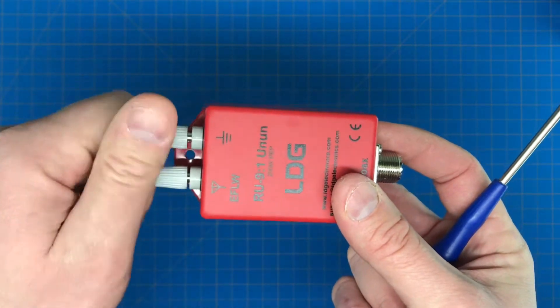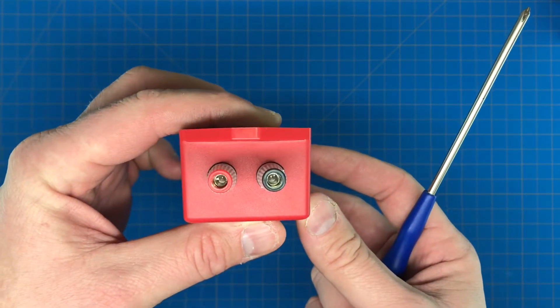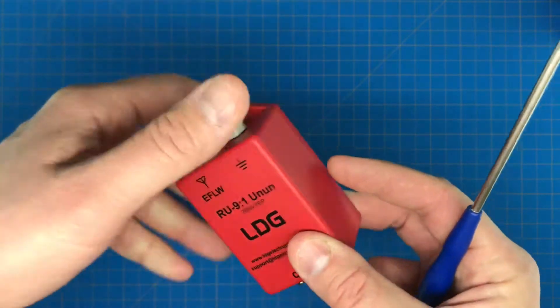As you can see, there are some binding posts here which will accept banana plugs. That's my plan—I'm going to use a banana plug here for the antenna, for the actual wire connection.